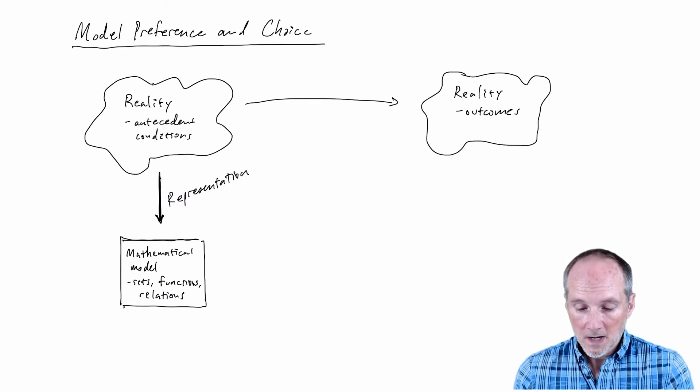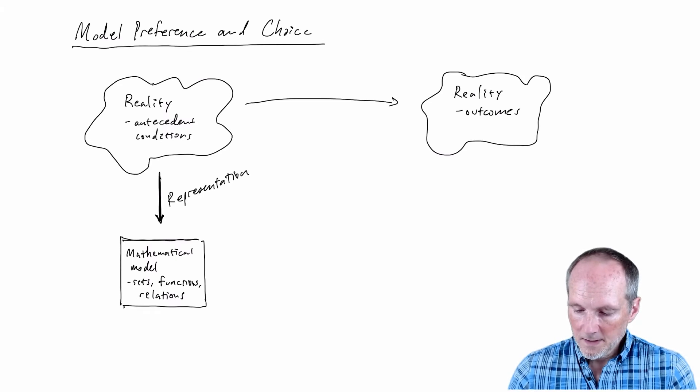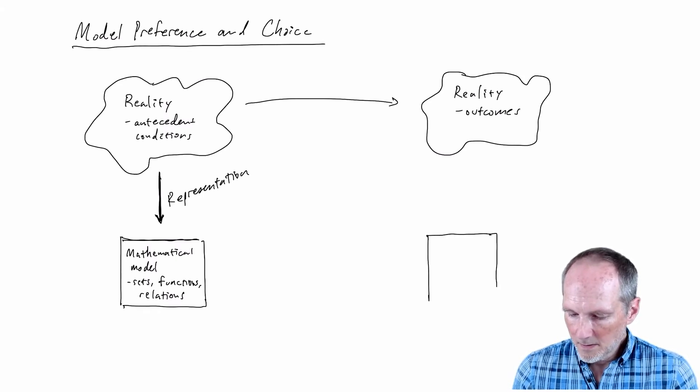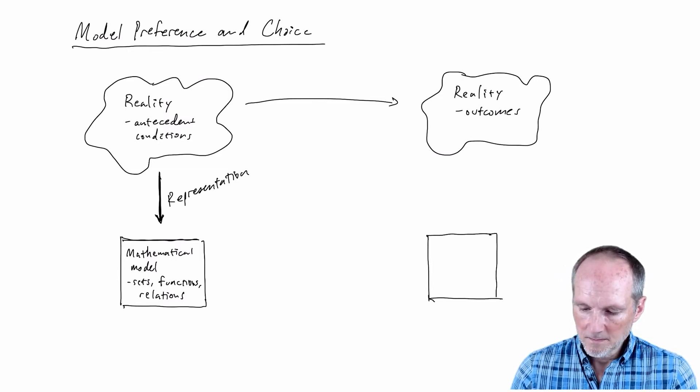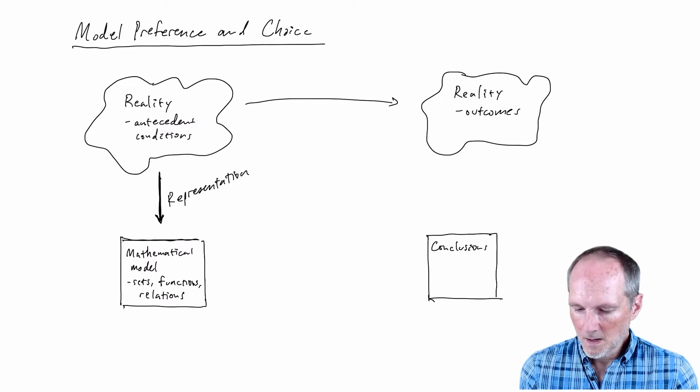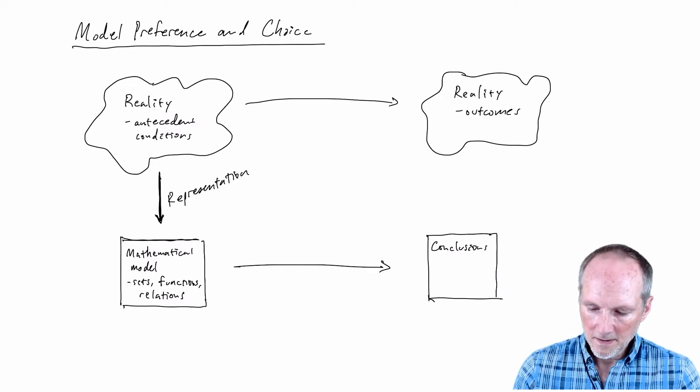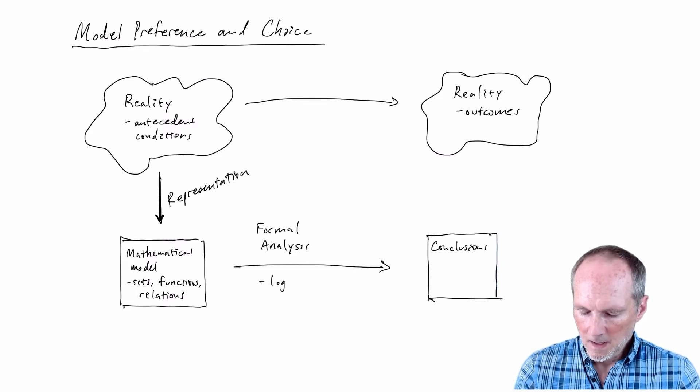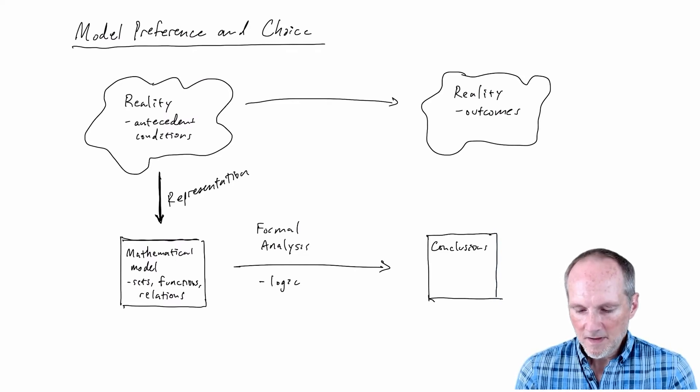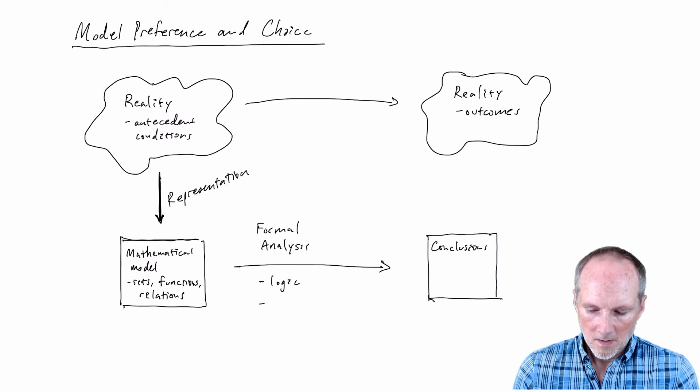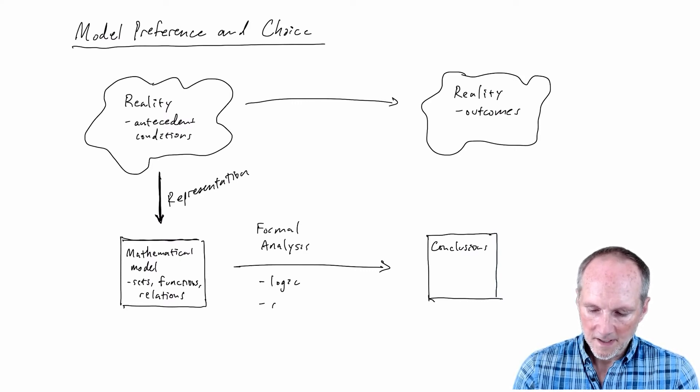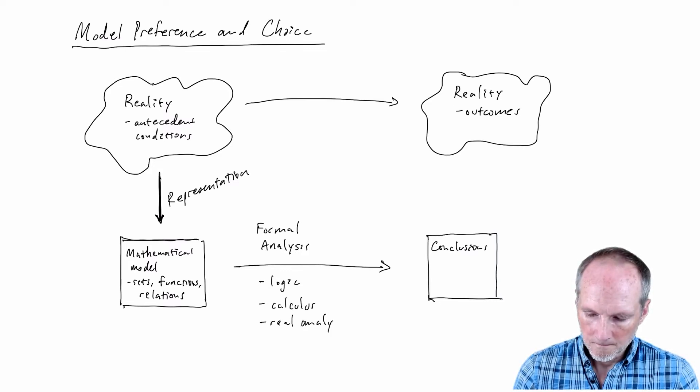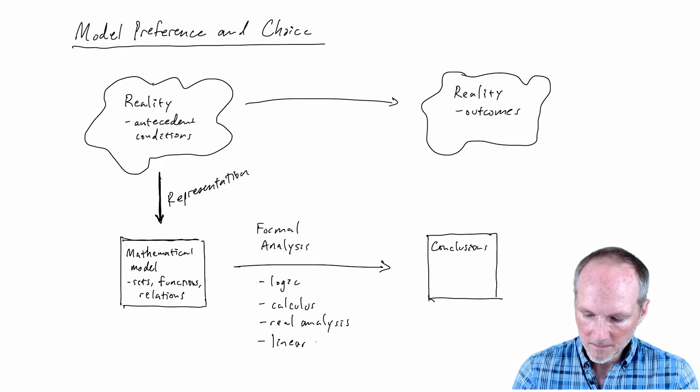Once we have the model written down then we can apply formal methods to draw some conclusions from the model and this arrow here is our formal analysis arrow and that's going to involve logic is an essential part of that and there's tools for mathematics like calculus, real analysis, linear algebra, and so on. The list goes on and on.